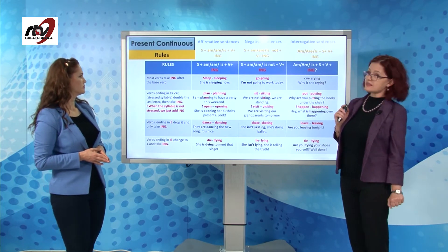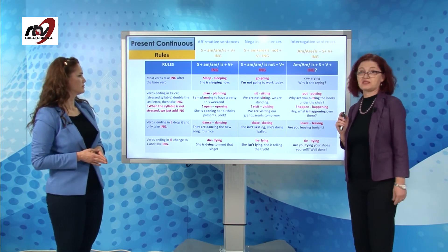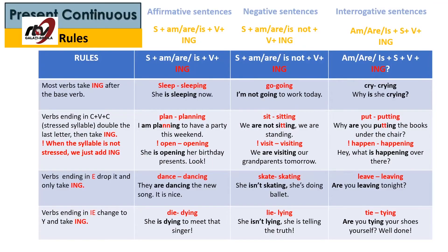Present continuous is a lot easier than present simple, if you're asking the teachers. Most verbs take -ing after the base form, like sleep → sleeping, go → going, or cry → crying. We have three columns with forms for the affirmative, negative and interrogative. Exceptions apply when the verb ends in consonant-vowel-consonant and this last syllable is stressed — we double the last letter then add -ing. For example: plan → planning, I'm planning to have a party. Sit → sitting, we're not sitting, we're standing.